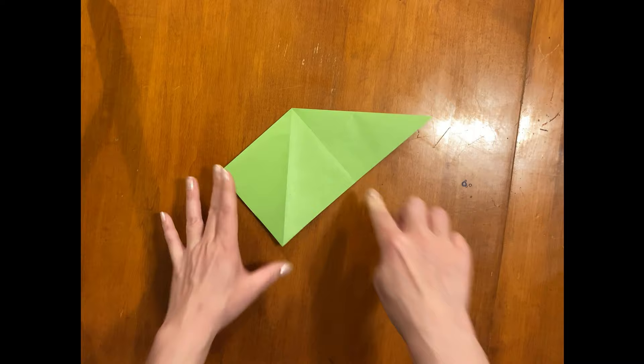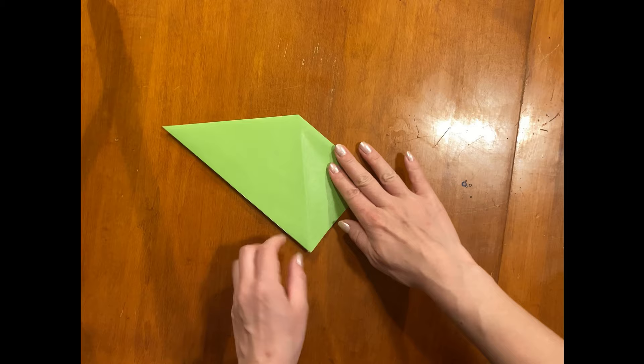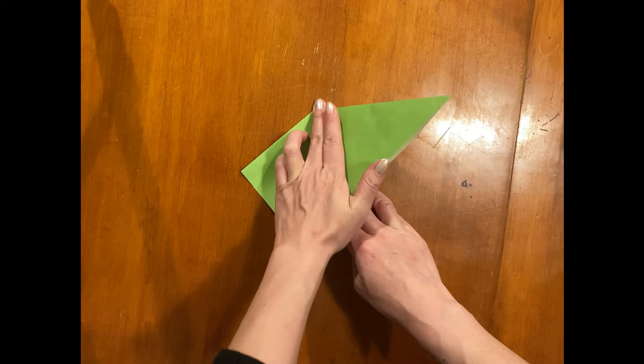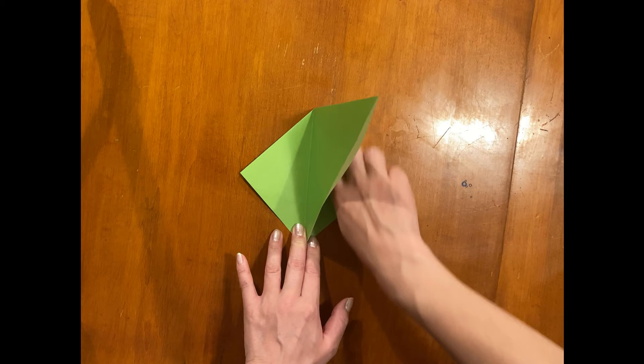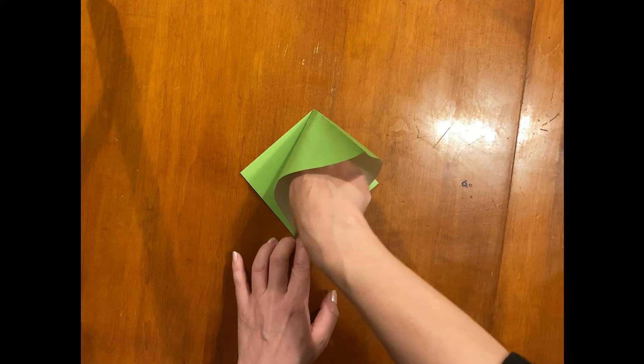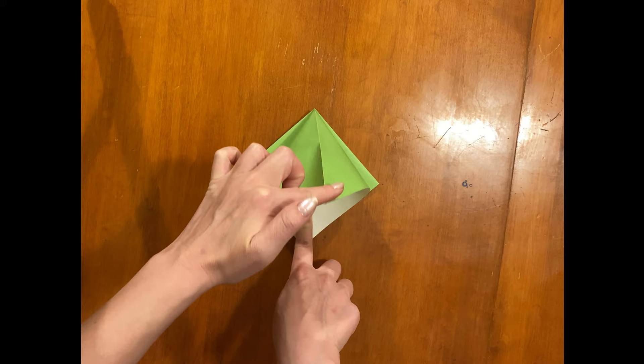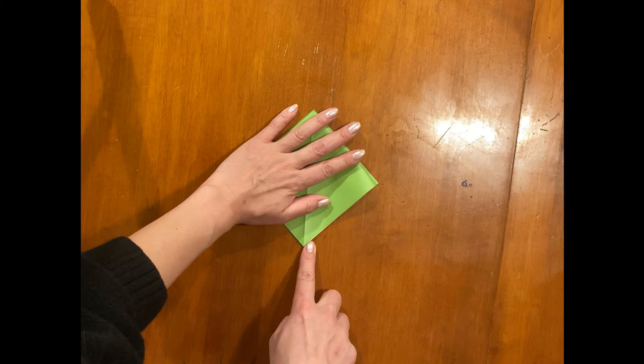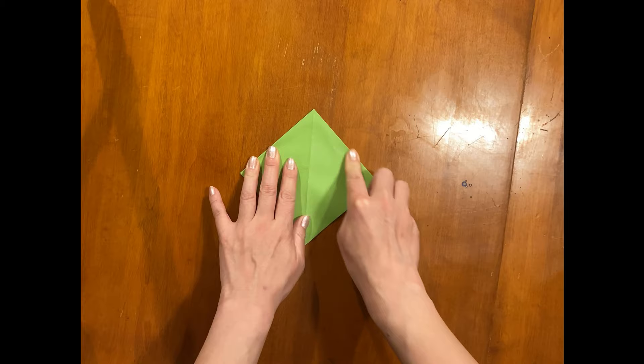And you will flip. You will see still half side of triangle. You'll do the same on the other side. Put your finger in there and push it to meet the bottom. Now you have a little square.